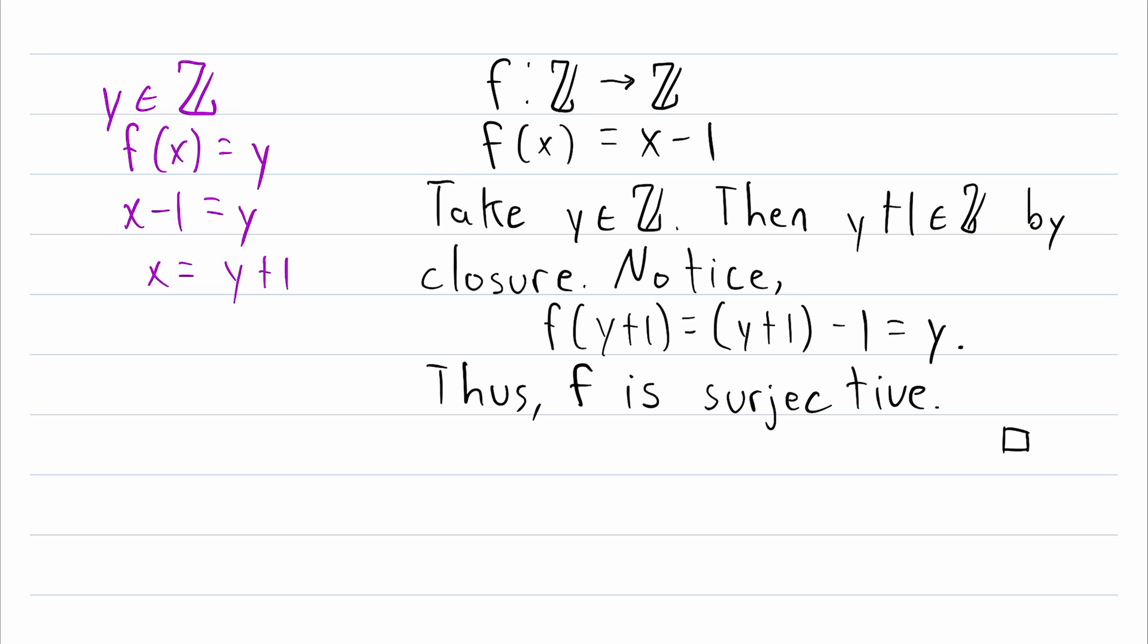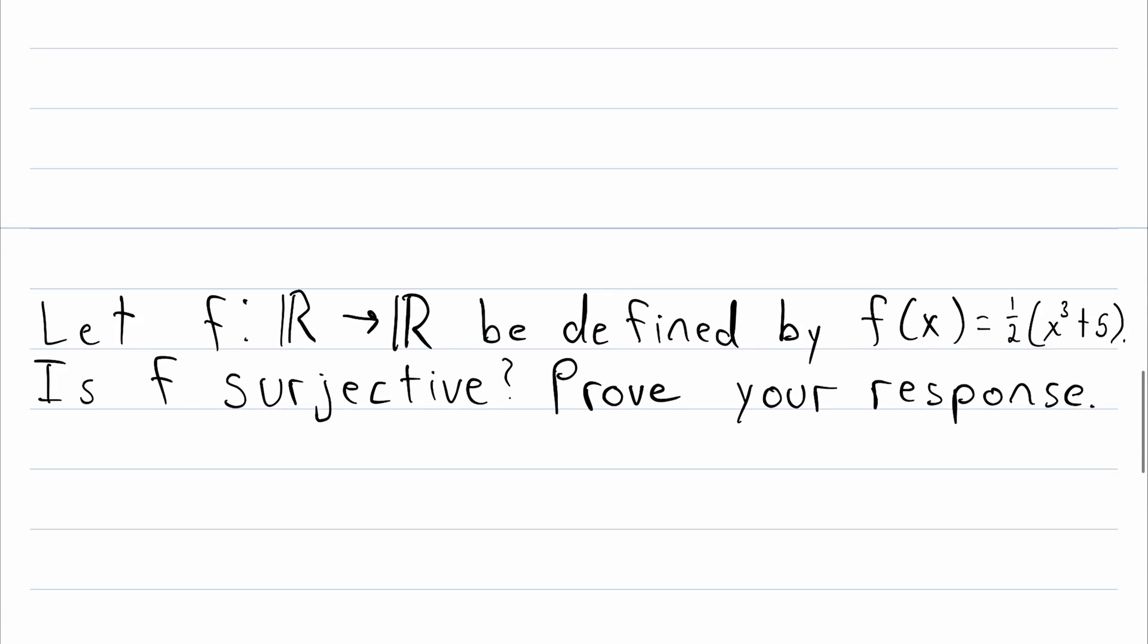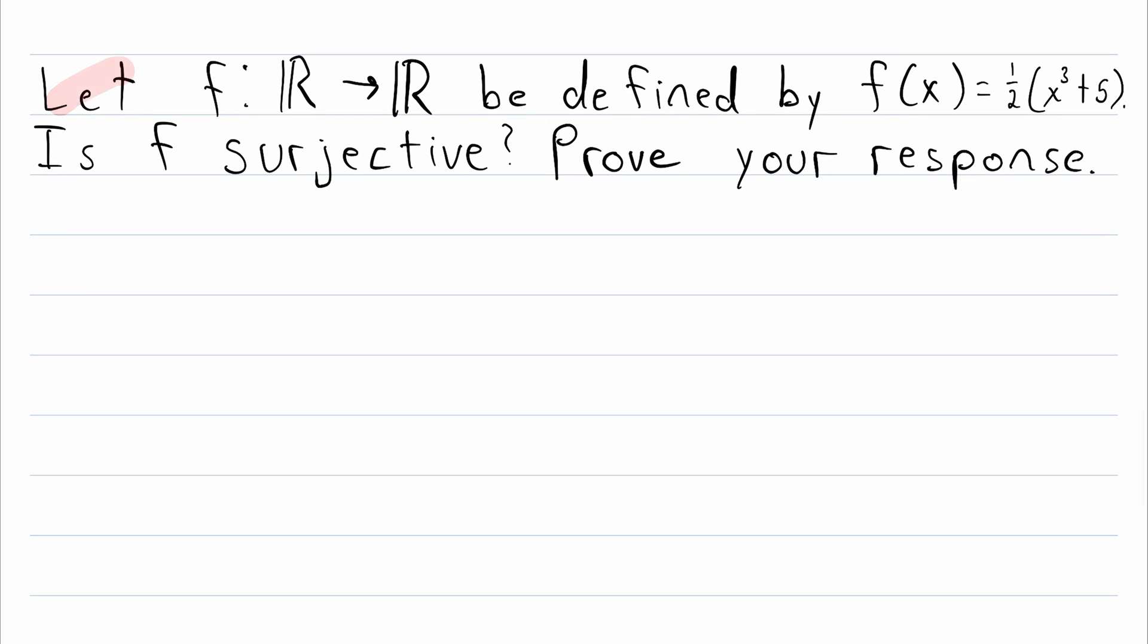Certainly don't expect this little lesson to make you a master at proving functions are surjective, but I hope it's a helpful little glimpse into a simple proof of surjectivity. And I will just leave you with an example problem to try on your own. Let the function f map the reals to the reals, and it's defined like this: f of x is equal to 1 half times x cubed plus 5. So is f surjective? Prove your response.